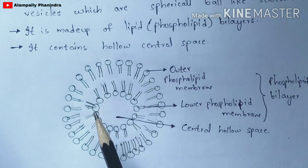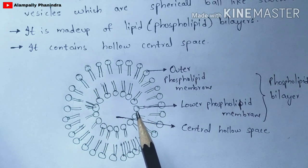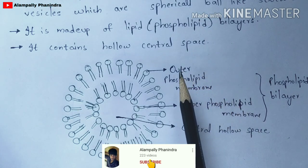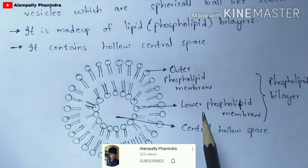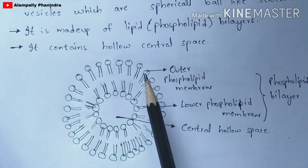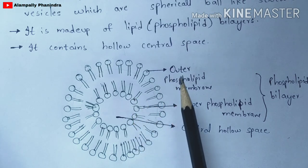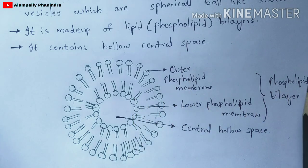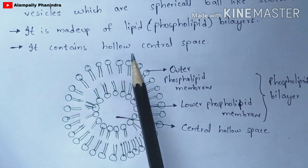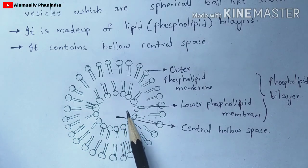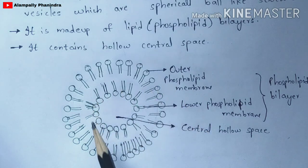The liposome is made up of a phospholipid bilayer, which is essentially the cell membrane of a cell. The bilayer consists of two layers: an outer phospholipid layer and an inner phospholipid layer. Together, these two layers form the phospholipid bilayer. At the center region, the liposome consists of a hollow, empty space.